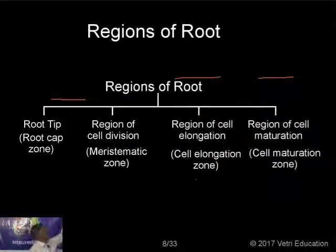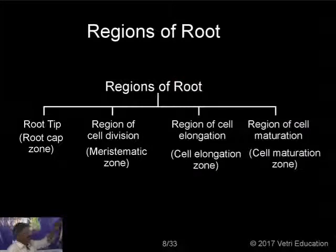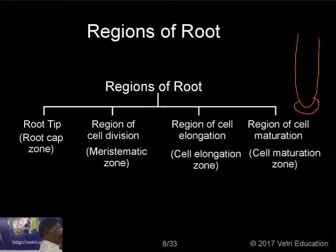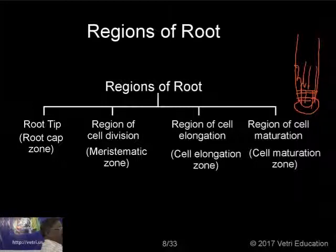Regarding the root tip — the regions of the root. In a root tip, the lower portion has the root cap. Above that is the meristematic region. Above the meristematic region, the cells are elongated — that is the region of elongation. Then you can find the root hairs — this is the root hair region. Beyond that is the area of maturation, from which the lateral roots are developed.